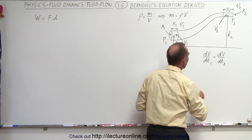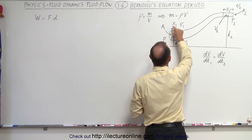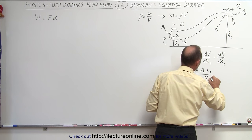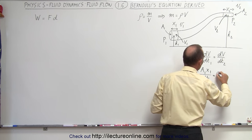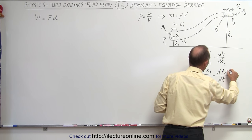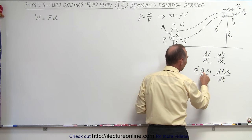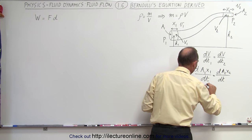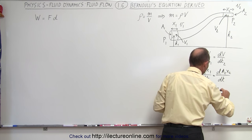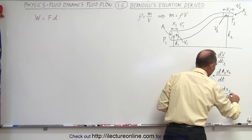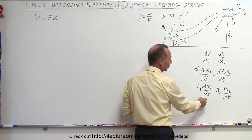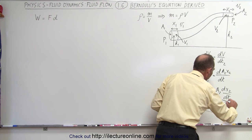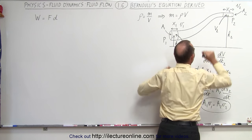Starting with continuity: the volume at point 1 equals A1 times X1. Taking the time derivative of A1·X1 equal to A2·X2, and since A1 and A2 are constants, we get A1·(dX1/dt) = A2·(dX2/dt). Since dX/dt is velocity, this gives us A1·V1 = A2·V2, relating velocities at any point in the pipe to the cross-sectional area.